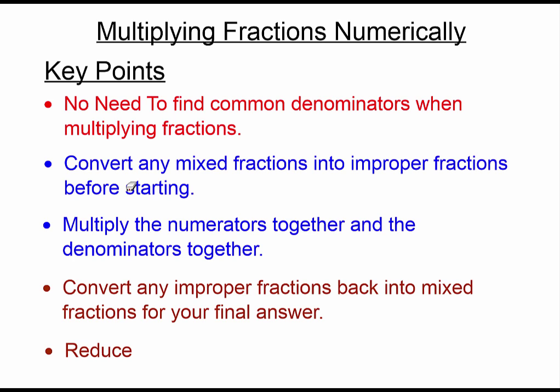Here's how you do this: multiply the numerators together, and then multiply the denominators together. That's it — that's as simple as it gets. Then convert any improper fractions in your final answer back to a mixed fraction, and then reduce.